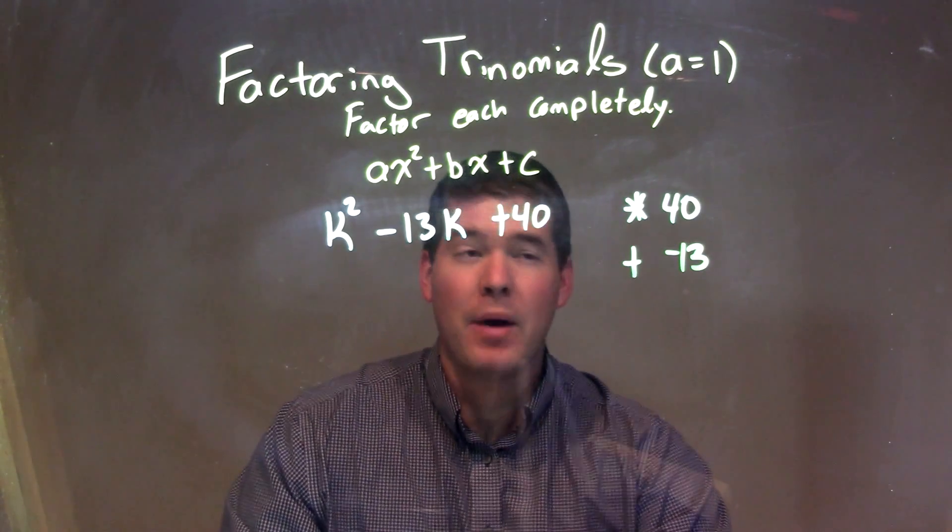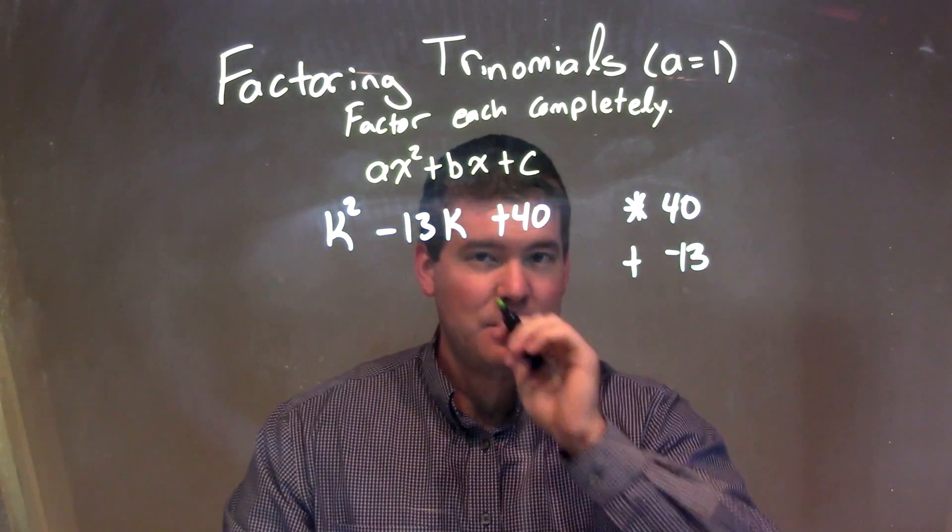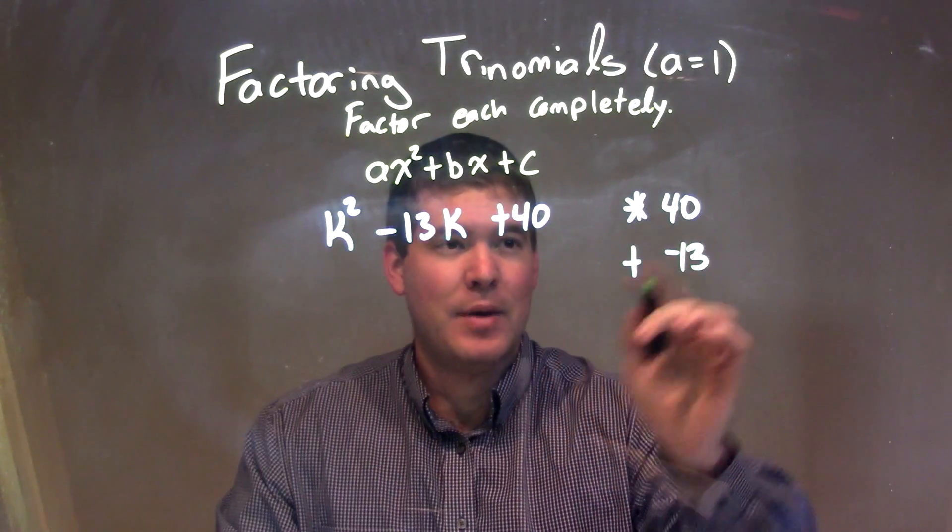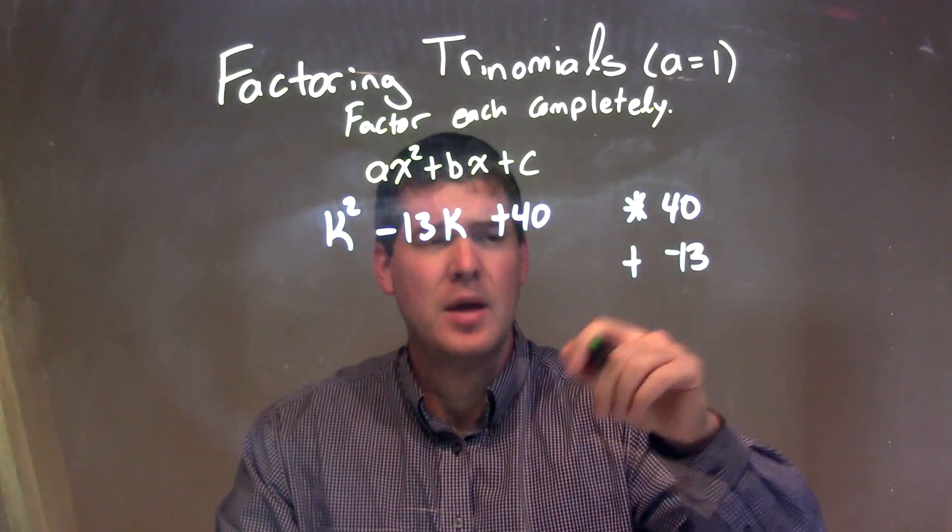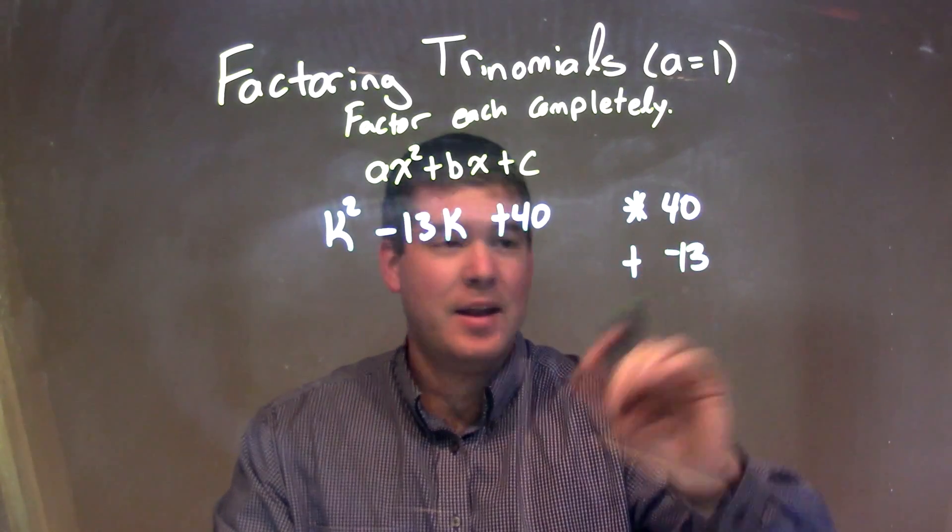What two numbers multiply to be a positive 40 and add to be negative 13? I'm thinking about, well, it's a positive number when multiplied, so they both have to be negative. And a negative 8 and a negative 5.